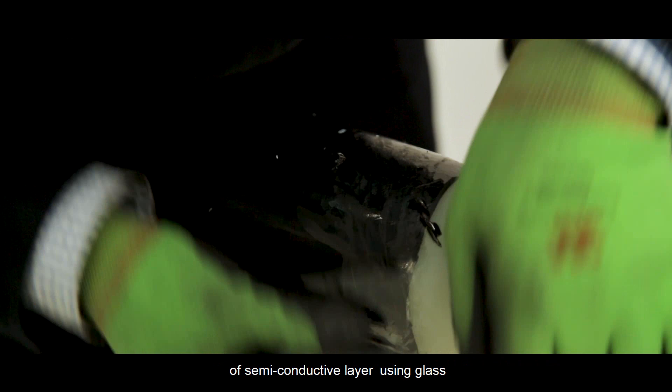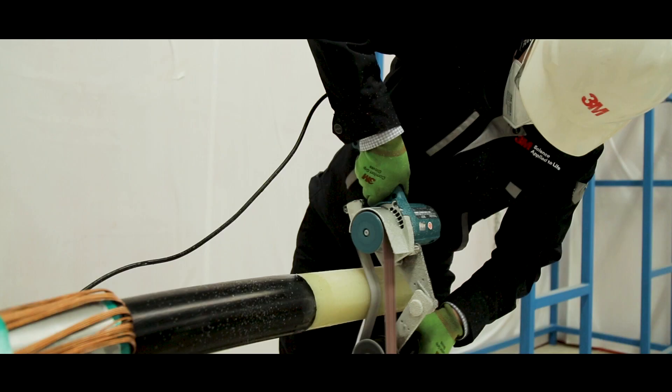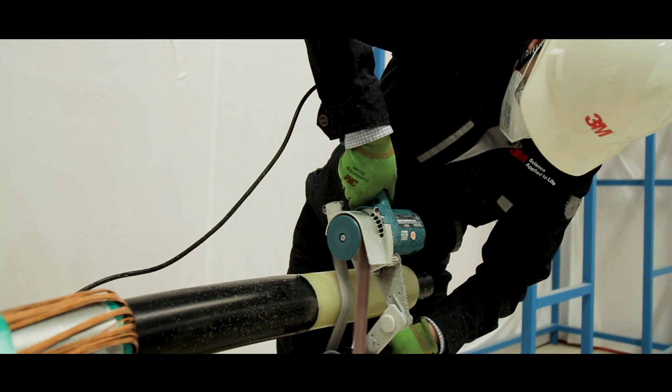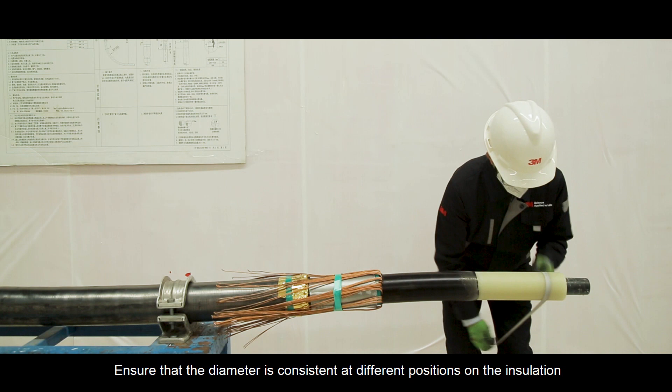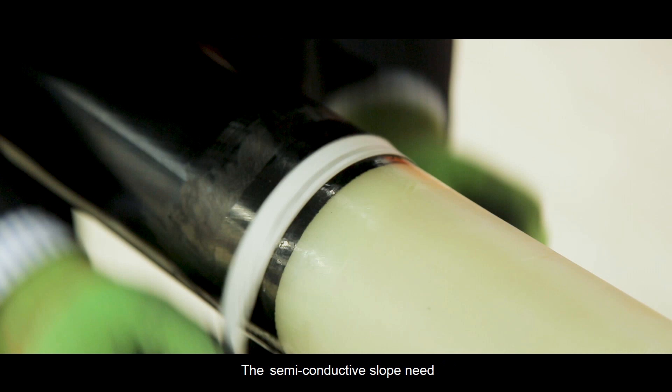Make 30mm smooth slope on the edge of semi-conductive layer using glass. Abrade the insulation with sanding machine and then change to manual sanding. Ensure that the diameter is consistent at different positions on the insulation and make sure there are no cuts or defects. The semi-conductive slope needs to be manually abraded and polished.